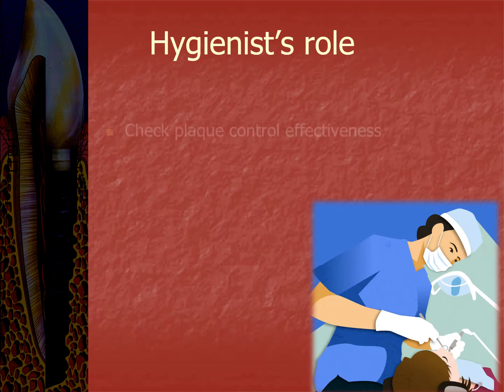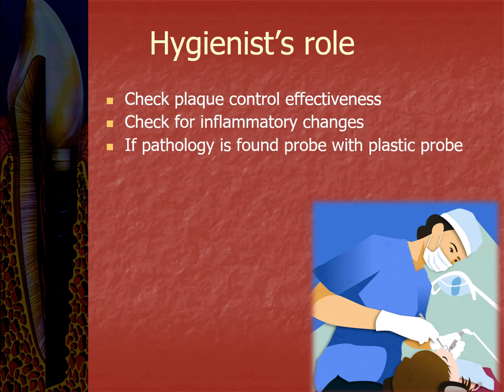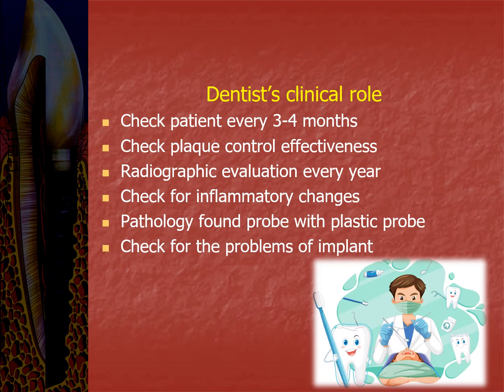The hygienist's role includes checking plaque control effectiveness, checking for inflammatory changes, and if pathology is found, probing with a plastic probe, performing supra-gingival scaling, and checking for any problems of the implant. The dentist's clinical role includes checking the patient every three to four months, assessing plaque control effectiveness, performing radiographic evaluation every year, checking for inflammatory changes, probing with a plastic probe if pathology is found, and checking for any issues with the implant. Follow-up is a must for dental implant therapy.